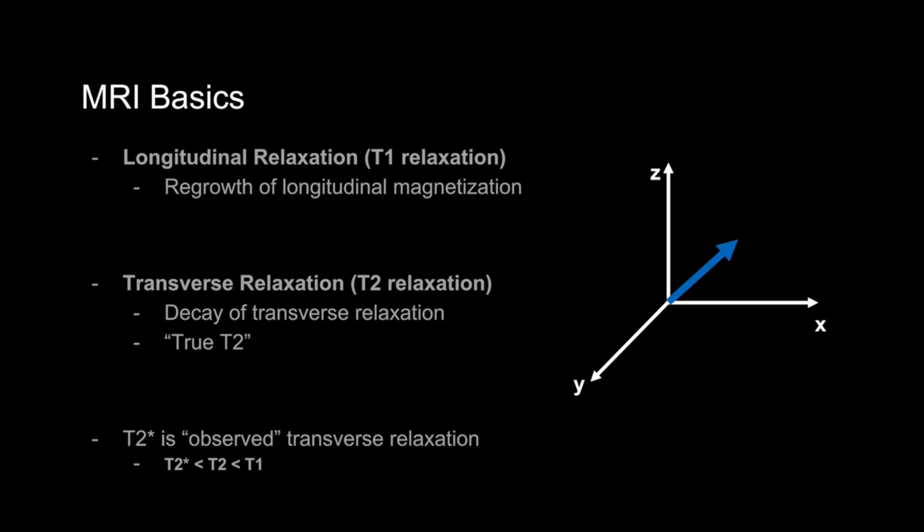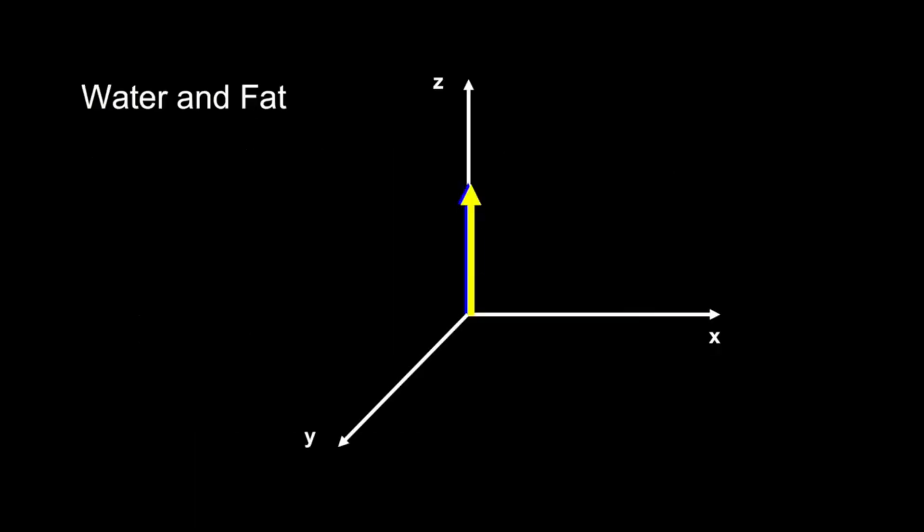Before I go on, if you have no MRI background and are lost right now, that's okay. Just stick it out. We'll get to more clinically relevant things relatively shortly. If you take one thing away from the last few slides, it should be this. Any given tissue has a particular T1 relaxation time, namely how fast it recovers magnetization of the z-axis, and a T2 relaxation time, how long it takes for transverse signal to decay. And we can differentiate tissues based on this, which is the whole point of imaging.